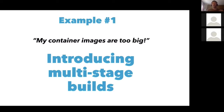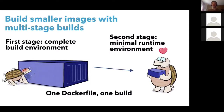People have been working around that by creating multi-stage builds with shell scripts and other tooling or makefiles. Now, at DockerCon, we introduced multi-stage builds, which allows you to have the first stage of your build process use a Docker image that's pretty heavy — it has all your build environment — and that stage creates an artifact that you copy into a very minimal runtime image. You just copy the artifact, so the final image will be much smaller.